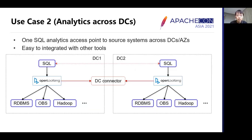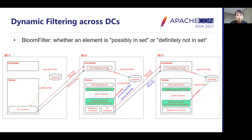In the second use case, we build a unified query engine across data centers. The SQL engine — representing different analysis tools — can be deployed in any DC and connect different sources from different DCs via a DC connector. User queries are pushed to another DC's data sources if necessary. We also use dynamic filters to reduce data transfer cost.